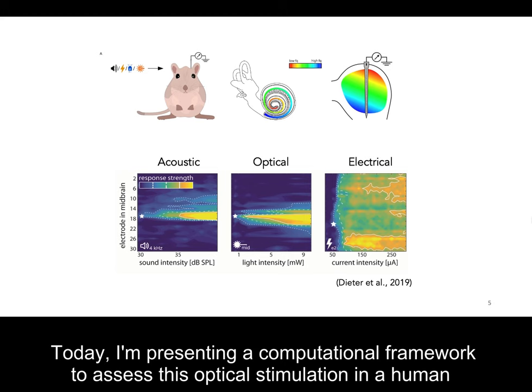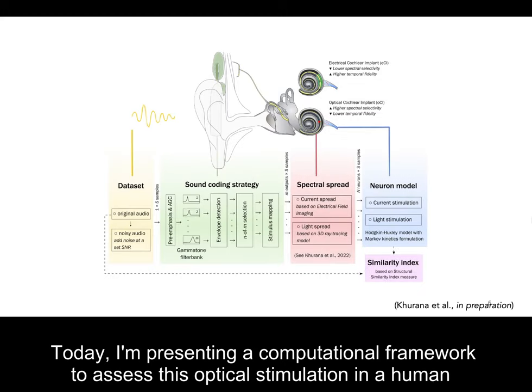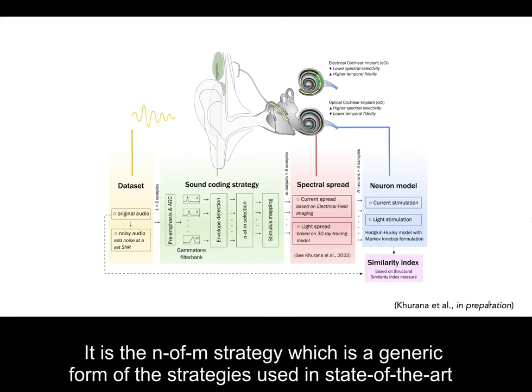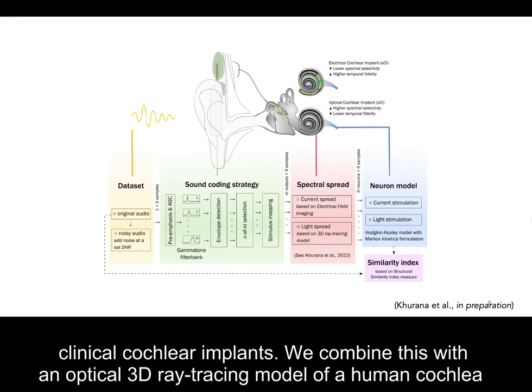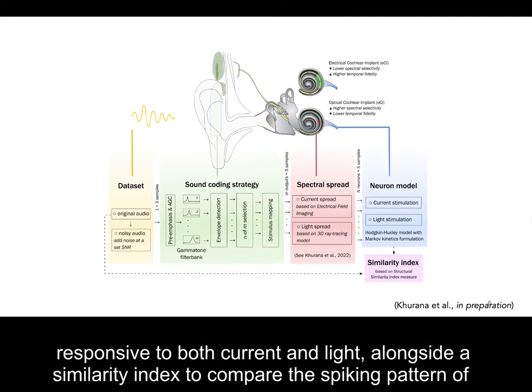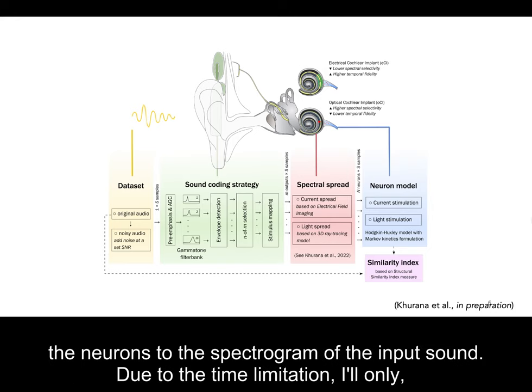Today I am presenting a computational framework to assess this optical stimulation in a human cochlea model. We took a dataset of 40 audio files and implemented a sound coding strategy — the N-of-M strategy, which is a generic form of the strategies used in state-of-the-art clinical cochlear implants. We combined this with an optical 3D ray tracing model of a human cochlea to investigate how light travels and spreads inside the cochlea. We also created a neuron model responsive to both current and light, alongside a similarity index to compare the spiking pattern of the neurons to the spectrogram of the input sound.